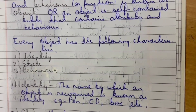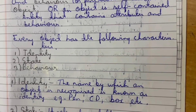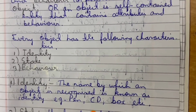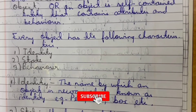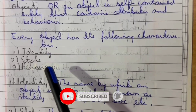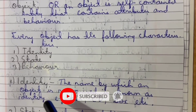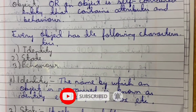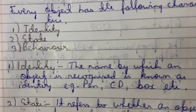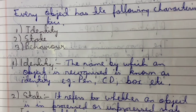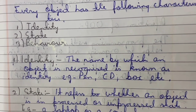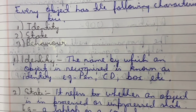Every object has the following characteristics: identity, state, and behavior. Identity is the name by which an object is recognized. For example, pen, CD, box, table, chair.